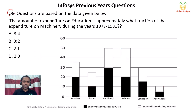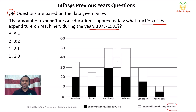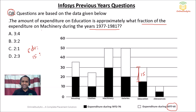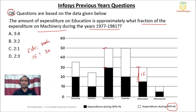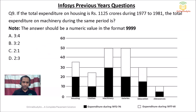Question 8: the expenditure on education during 1977–81 is approximately 15 (from 15 to 30 on the chart). The expenditure on machinery is approximately 20 (from 30 to 50). So the fraction is 15/20 = 3/4. Option A is the correct answer for question 8.